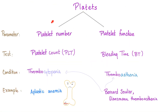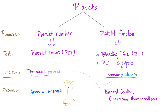Platelets have two parameters: platelet number and platelet function. To test platelet number, you do a platelet count. To test platelet function, you have bleeding time and platelet aggregometry. The condition where platelet numbers are down is thrombocytopenia — for example, aplastic anemia. The condition where platelet function is down includes Bernard-Soulier and Glanzmann thrombasthenia, among many others.